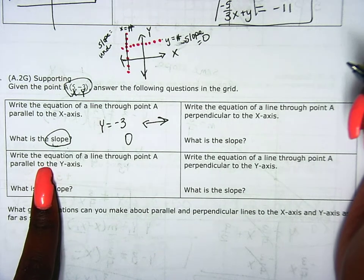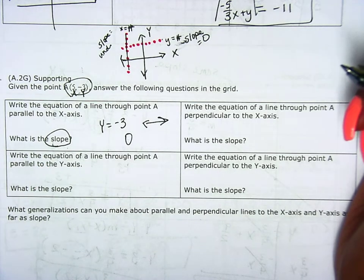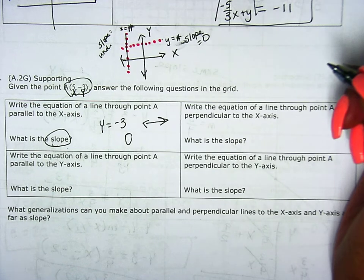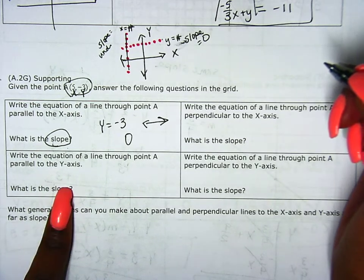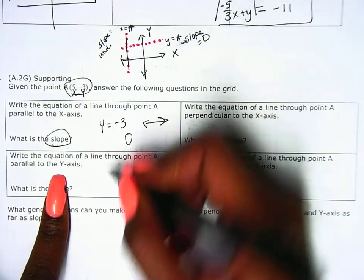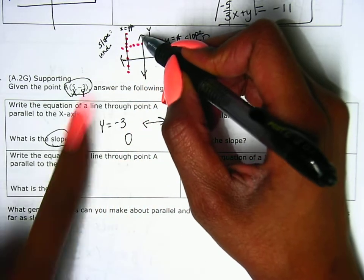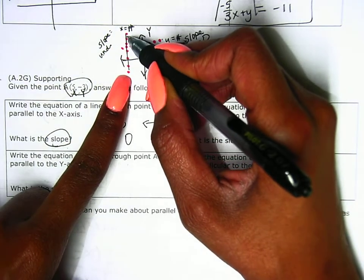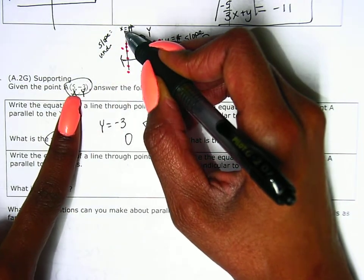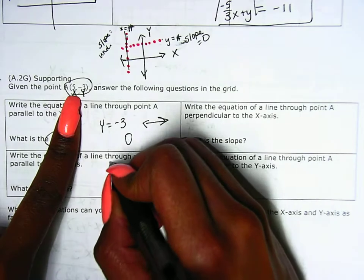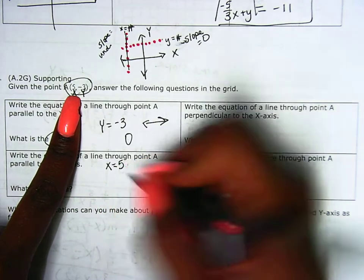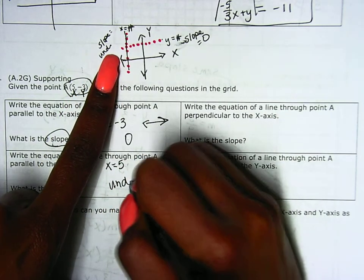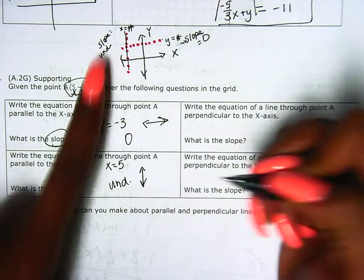Write the equation of a line that goes through the point that is parallel to the y axis. So my equation for this one — it's parallel to the y axis — is x equals a number. x is equal to 5 in this problem. And here our slope is undefined, because it is a vertical line.